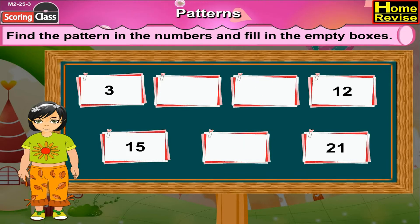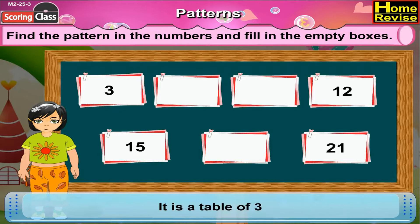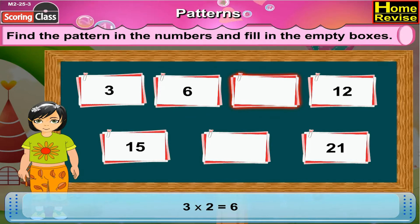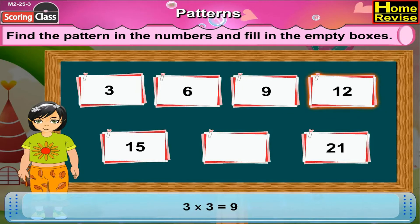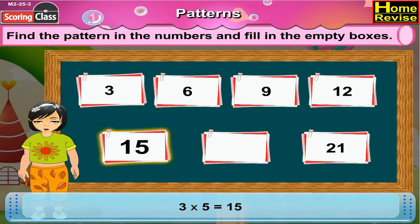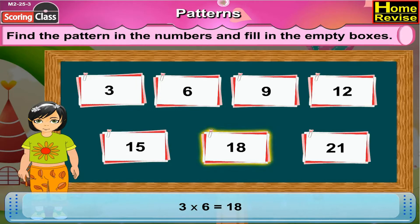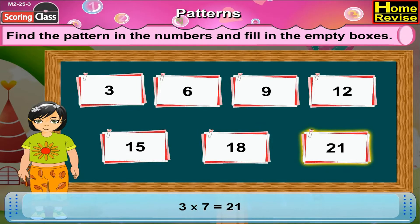If you notice it carefully, you will realize it is the table of 3. 3 ones are 3. The next box will have 3 twos are 6. The next box will have 3 threes are 9. The next box already has 3 fours are 12. Then 3 fives are 15. The answer in the next box would be 3 sixes are 18.